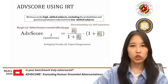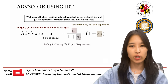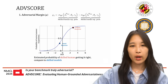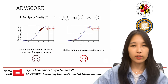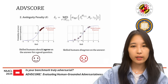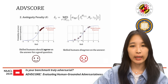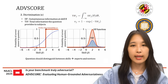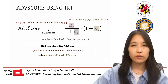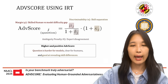Since we have access to the full skill distribution of subjects, we focus on the high-skilled subjects, excluding probabilities and question parameters inferred from low-skilled subjects. For adversarial merging mu, we compare the predicted correctness probability for skilled humans versus skilled models. For ambiguity penalty delta, we take the mean deviation of correctness probability of skilled humans — if skilled humans have widely varying predicted probabilities, it means there is disagreement. For discrimination kappa, we compute the total item information function TIF, which measures how much the question tells us about a subject's skill. When we combine these, we get the ADVScore. Higher and positive scores mean the question is hard for models, clear for humans, and good at revealing skill differences.